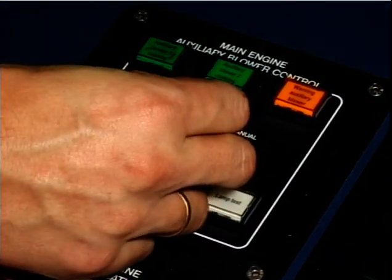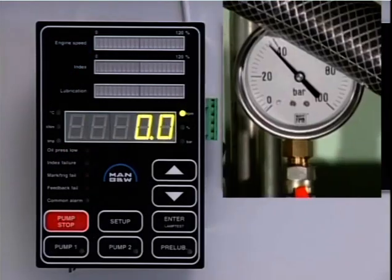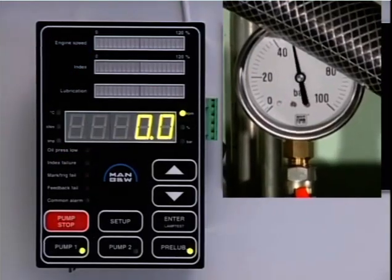When the auxiliary blowers are started up, the lubricating system will automatically start and carry out the pre-lubrication process.